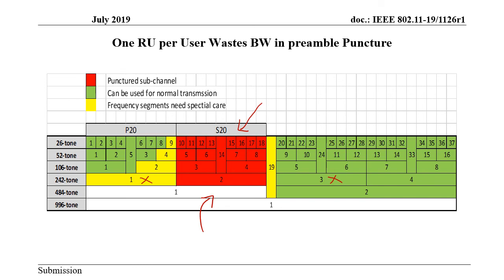Remember that this is also valid for single-user transmission in 11be. All in all, this gives us flexibility, which is one of the things that probably held back OFDMA in Wi-Fi 6 or 11ax. We hope 11be will do much better on that front with features like MRU.